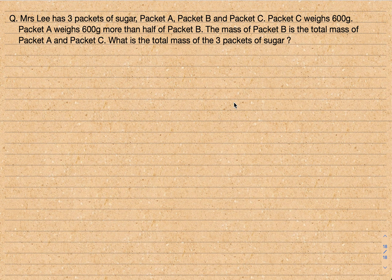Mrs. Lee has three packets of sugar: packet A, packet B, and packet C. Packet C weighs 600 grams. Packet A weighs 600 more than half of packet B. The mass of packet B is the total mass of packet A and C.